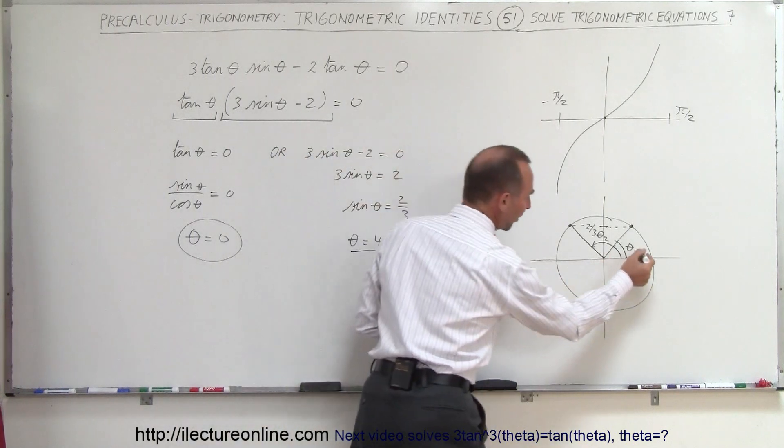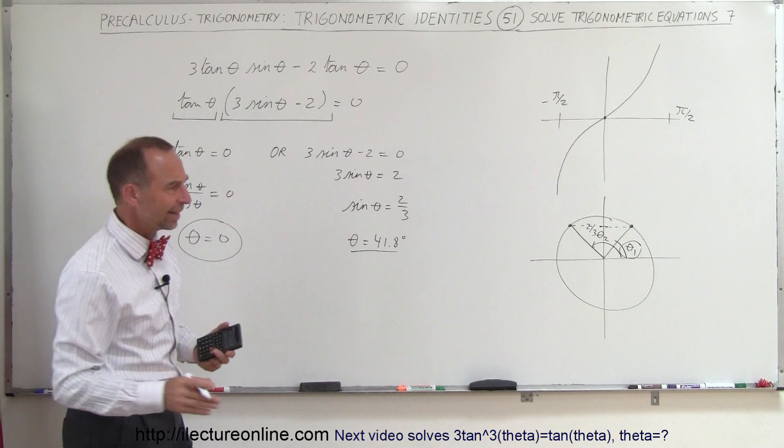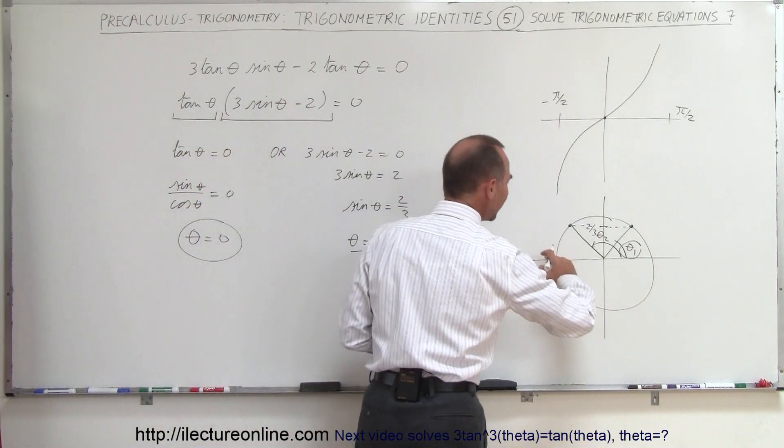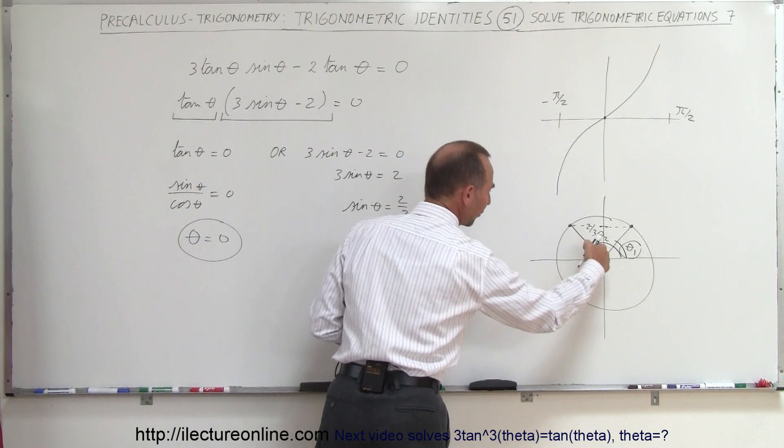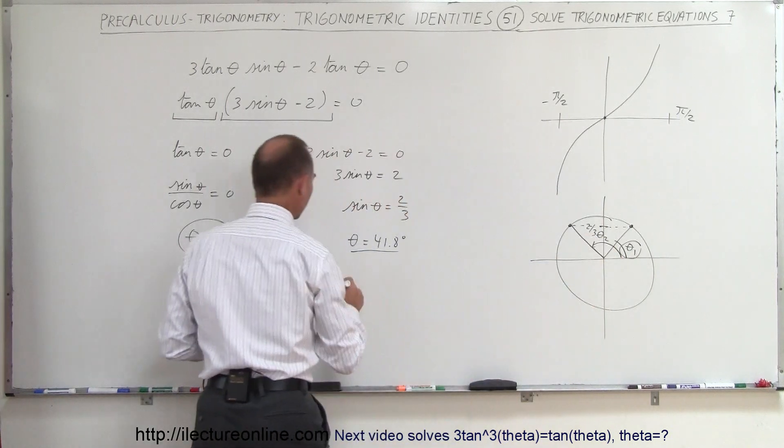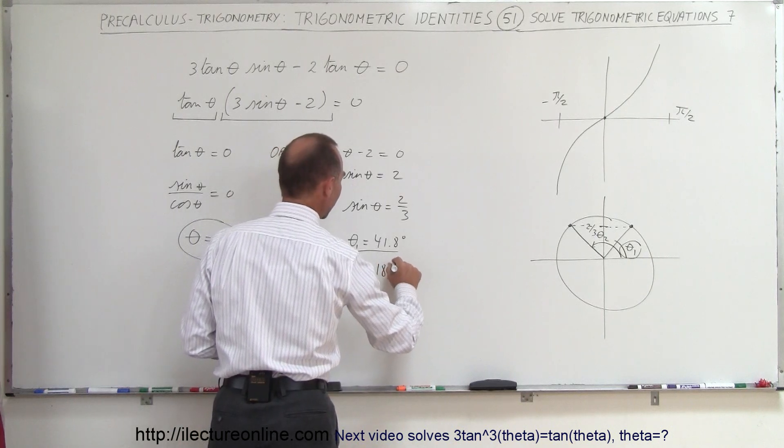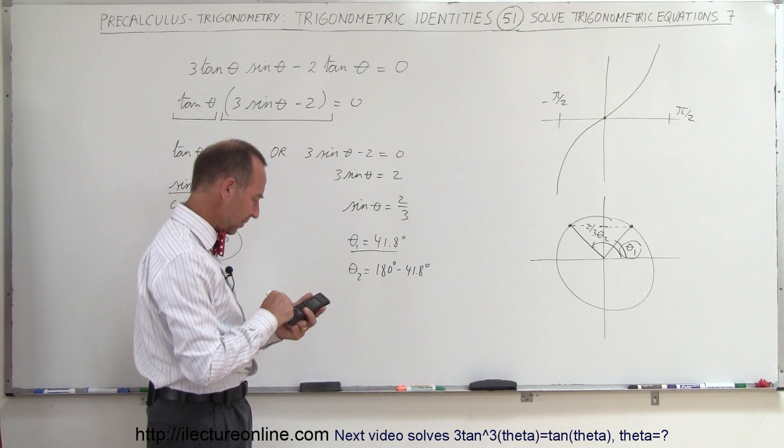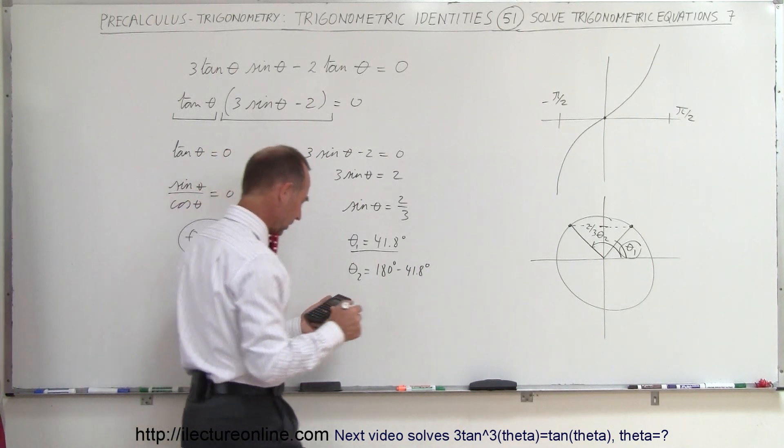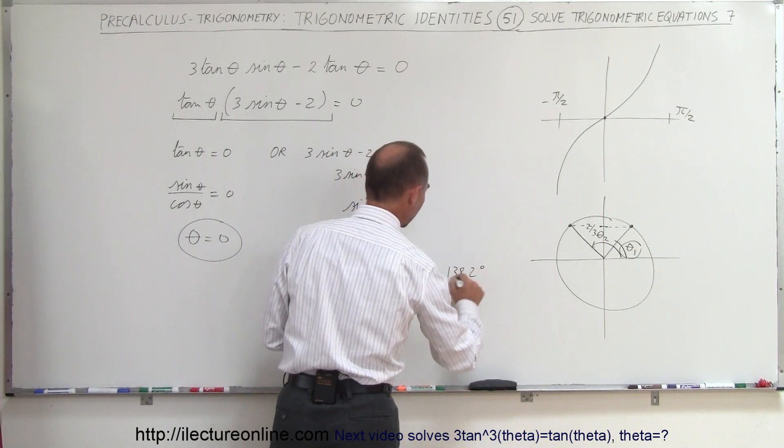To get the second angle, it would be 180 degrees minus 41.8. So that would be 180 minus 41.8 gives us theta sub two. So theta sub two is equal to 180 degrees minus 41.8 degrees, so we get 138 degrees or 138.2 degrees.